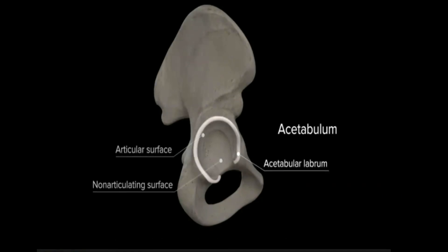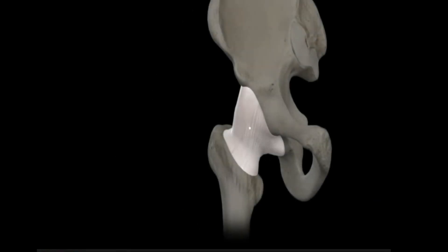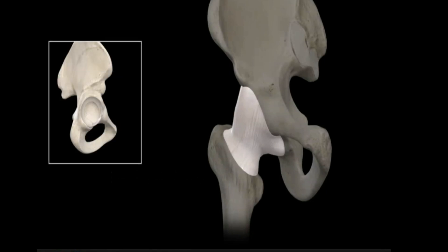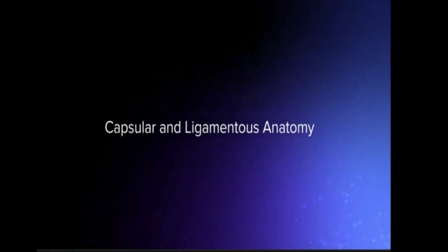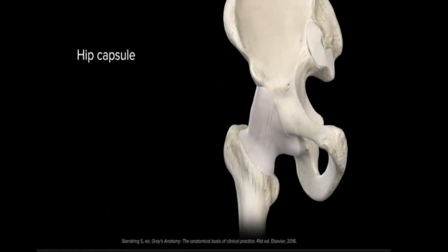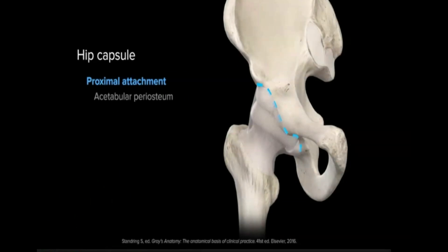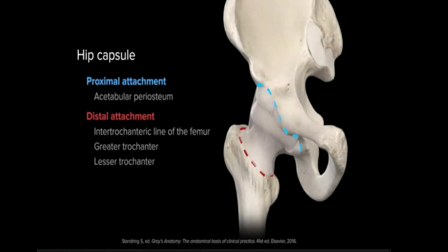Peripherally, a fibrocartilaginous rim of tissue referred to as the acetabular labrum acts to deepen the articular surface of the acetabulum. The capsule of the hip encapsulates the joint circumferentially and attaches to the labrum medially. In the incomplete area of the acetabulum inferiorly, the capsule is attached to the transverse acetabular ligament. The hip capsule, comprised of dense, cylindrically arranged fibers, attaches proximally through the acetabular periosteum and distally along the intertrochanteric line of the femur anteriorly, the greater trochanter superiorly, and the lesser trochanter inferiorly.